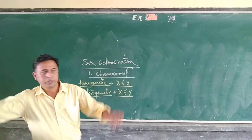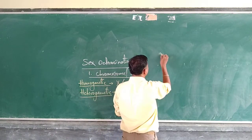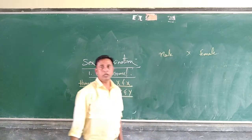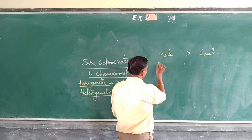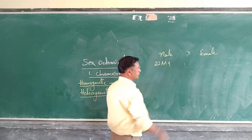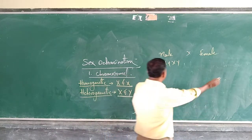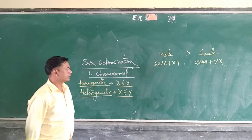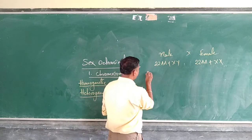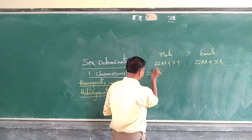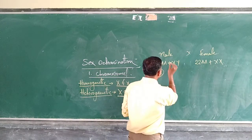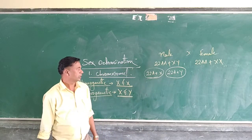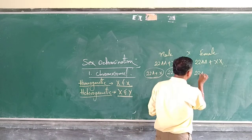Now we will take two parents. A male parent crosses with a female parent. The male will have 22 AA plus XY, and the female will have 22 AA plus XX. The gametes from the male will become 22A plus X and 22A plus Y. The gamete from the female will become 22A plus X.